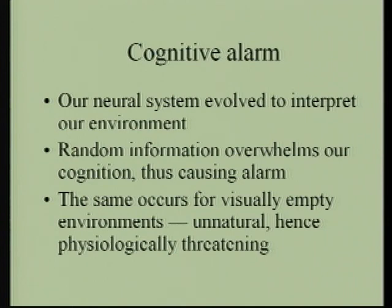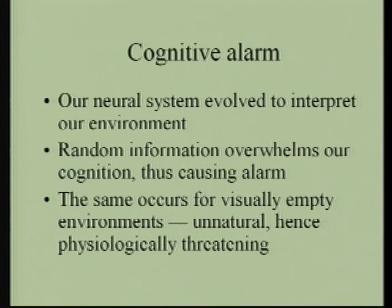Each symmetry cuts down the amount of information. Our neural system evolved to interpret our environment — that's the only reason we are here, because we evolved to negotiate our environment and recognize structure in it. Random information overwhelms our cognition, and when our cognition is overwhelmed, we are programmed to feel alarm. When we cannot interpret our environment to make sure it is safe, we trigger alarm, the adrenaline rises, and we set up the fight-or-flight syndrome. That has saved us from extinction.